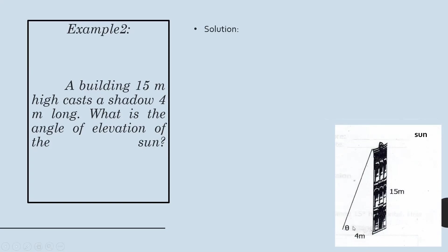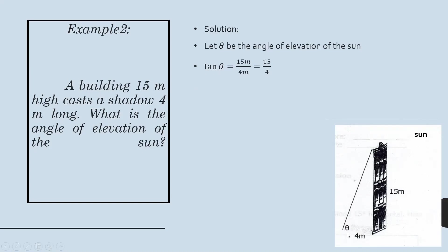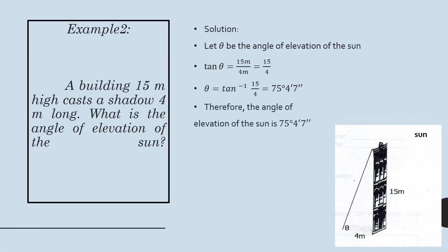If we were asked for the angle of depression of the sun, we would solve for that one instead. For the solution, we let theta be the angle of elevation of the sun. We can use tangent theta because we have the opposite and adjacent sides of the angle. So tangent theta equals 15 over 4, which is opposite over adjacent. To solve for the degrees, we use the inverse tangent of 15 over 4, which gives us 75 degrees 4 minutes and 7 seconds. Therefore, the angle of elevation of the sun is 75 degrees 4 minutes and 7 seconds. That's how you solve for the angle of elevation and depression.